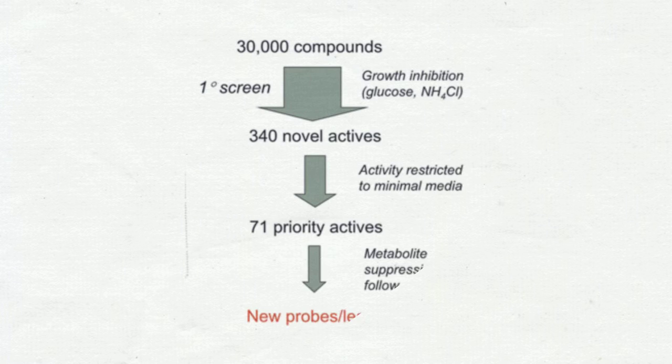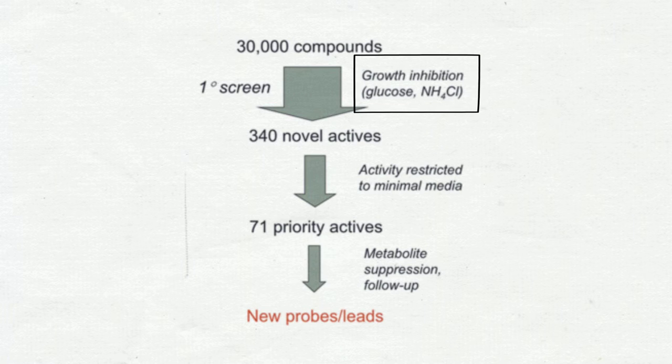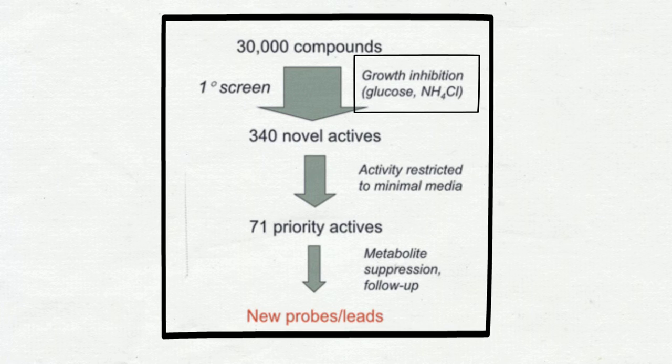Somaya's study began with a collection of 30,000 compounds that could potentially inhibit the growth of E. coli bacteria in a nutrient-limiting environment that contained only glucose and ammonium chloride. Essentially, each compound would be added to the petri dish of the bacteria and Somaya would observe the growth of bacteria over time.